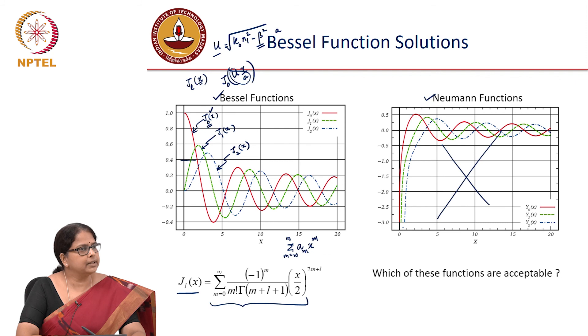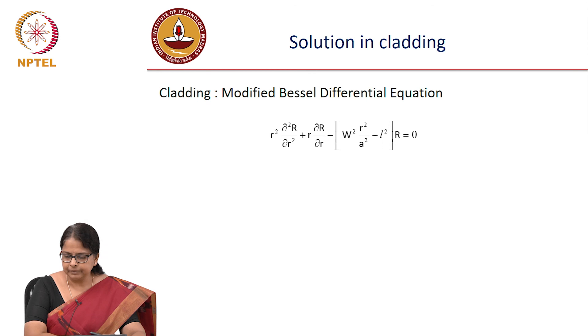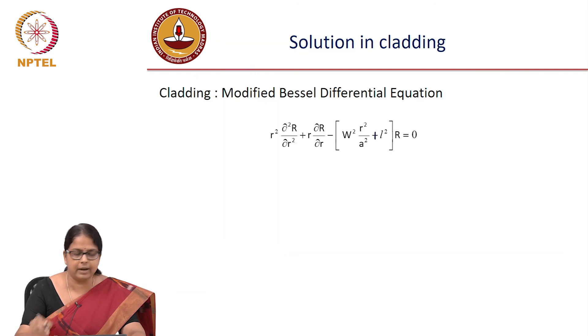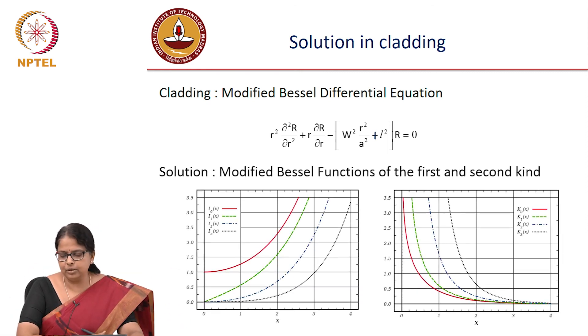So which of these functions are acceptable? Of course, Bessel functions are acceptable. And for the cladding, of course, this is plus here. The difference is instead of plus in the original Bessel function equation, you have a minus here. So, that equation gets called as modified Bessel differential equation and a modified Bessel differential equation also has series solutions and these series solutions are again modified Bessel functions of the first kind and second kind.